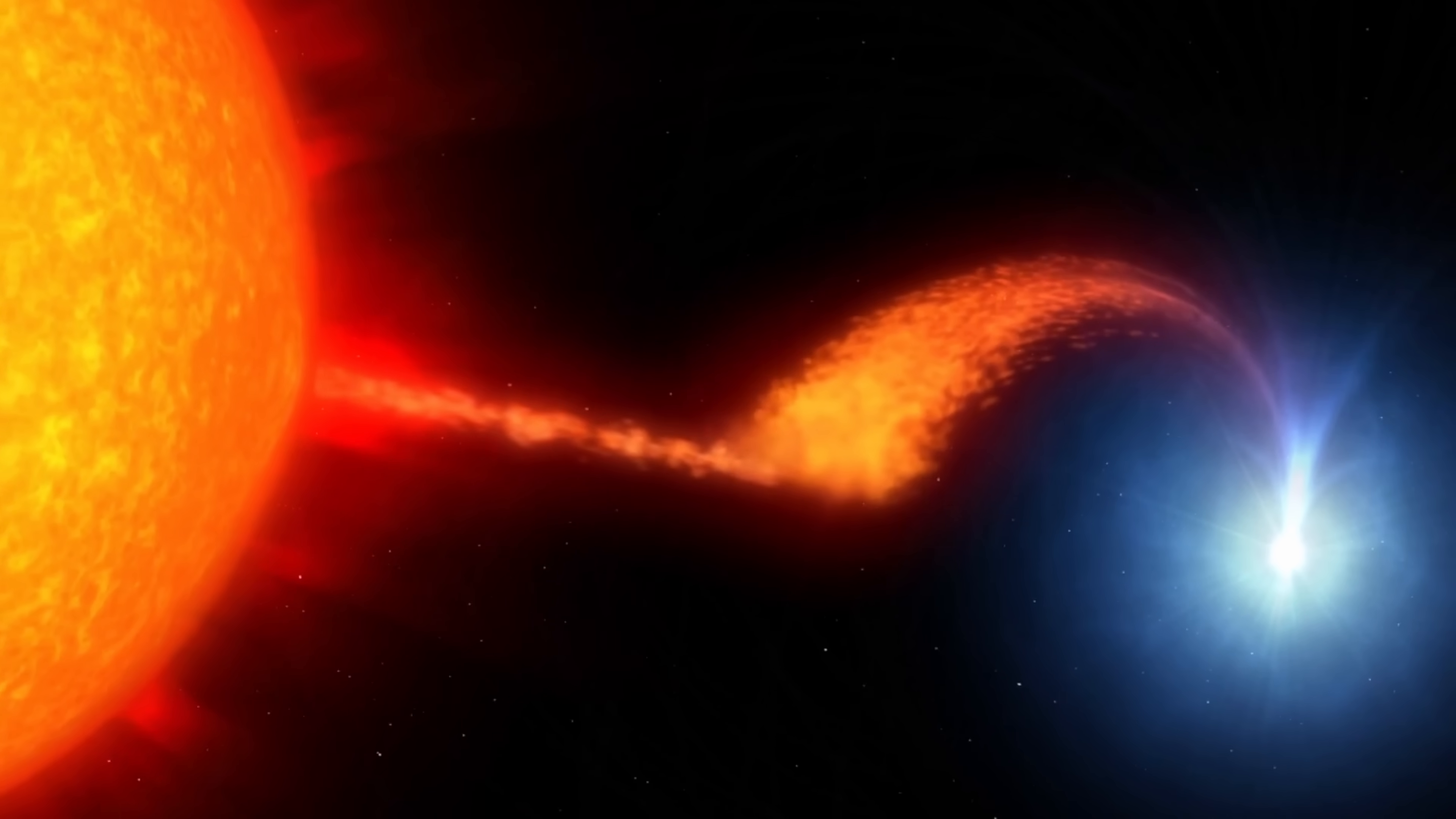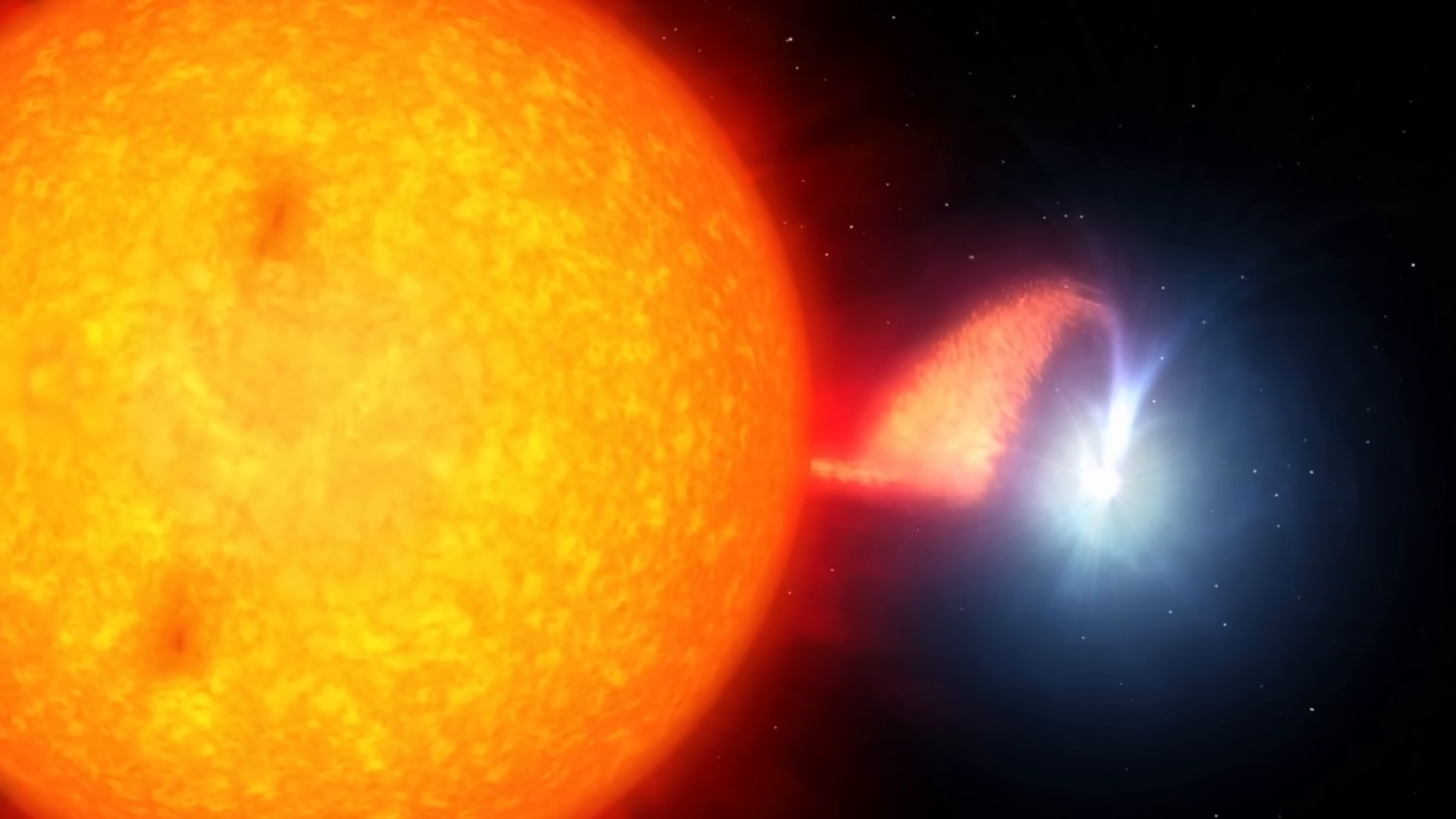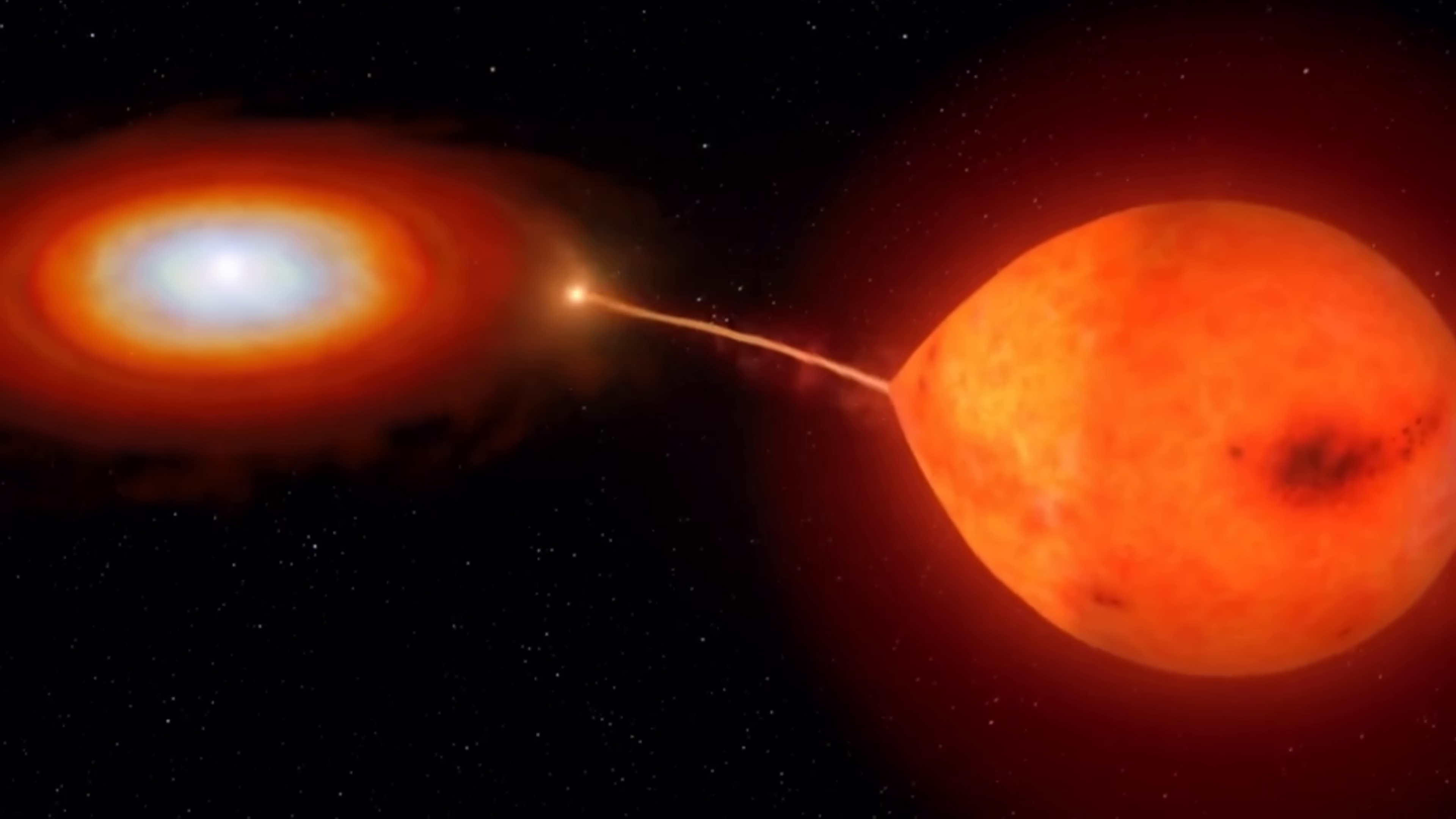But the overall idea is the same. They basically capture the mass from the nearby partner because the partner reaches what's known as the Roche lobe. Its mass starts to overflow into the black hole or the neutron star, with all of this in-falling mass then forming the accretion disk that eventually starts producing a lot of major emissions.